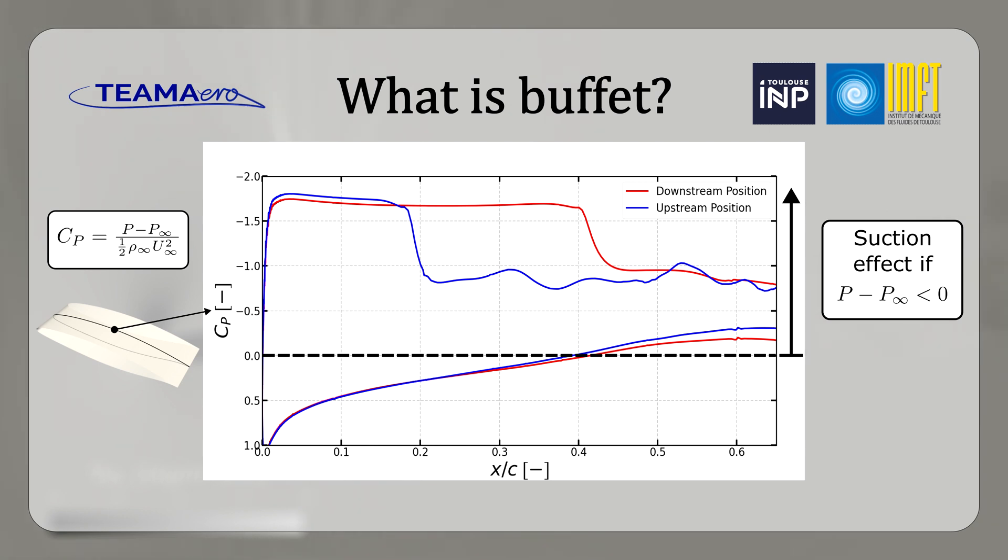In this graph, we can see the instantaneous pressure distribution over the centerline of the wing in two key moments. In blue, we have the case when the shock wave is at its most upstream location, while in red we have the case when the shock wave is at its most downstream location.